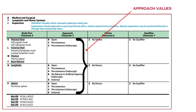This is how the approach values look in the ICD-10 PCS coding tables. Not every table will have all the approach values — depending on the type of procedure, body part, and root operation, the approaches may be limited to only certain values.